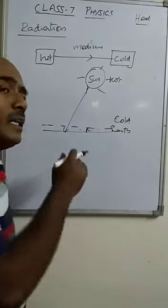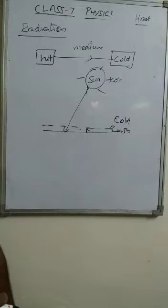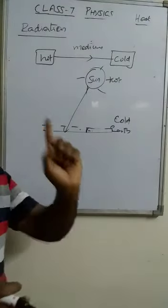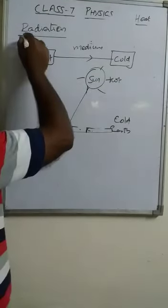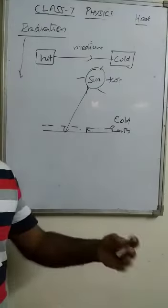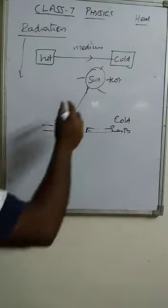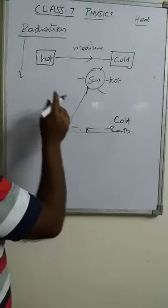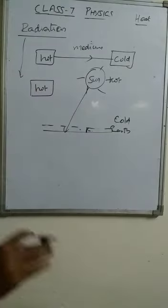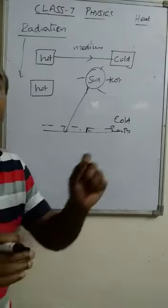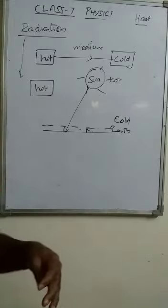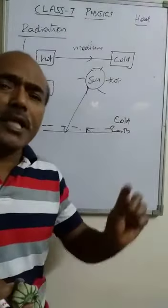We say the heat is radiated from the sun — not released, but radiated. Now, which kind of objects can radiate heat? We can say that all hot objects radiate heat. Whenever we take any hot object, it radiates heat. Examples of objects in our surroundings that radiate heat will be discussed in the next video.